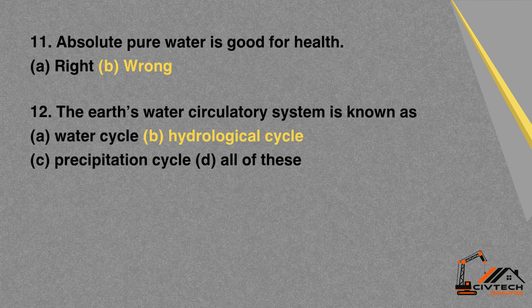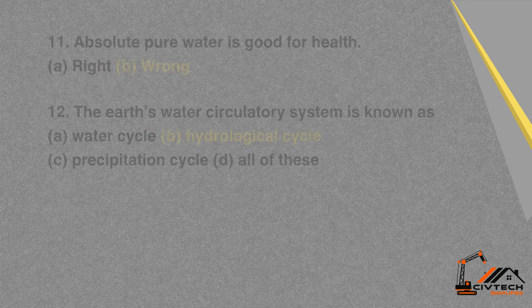MCQ 12: The Earth's water circulatory system is known as — A. Water cycle. B. Hydrological cycle. C. Precipitation cycle. D. All of these. Correct option: B. Hydrological cycle.